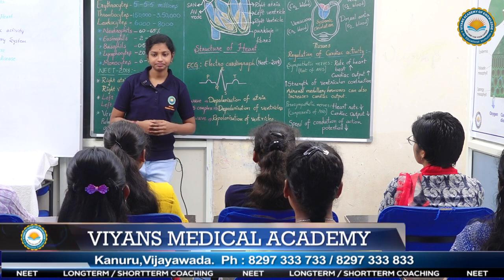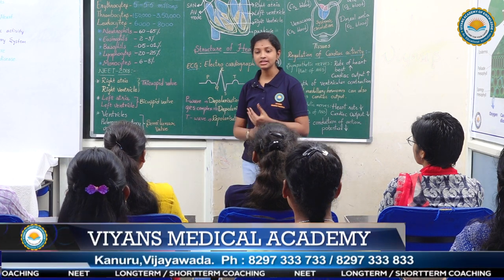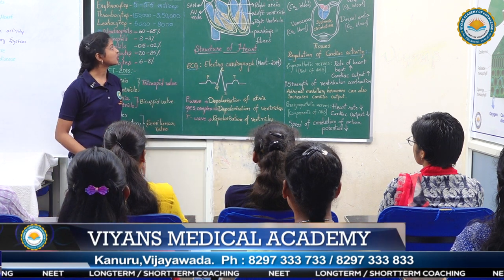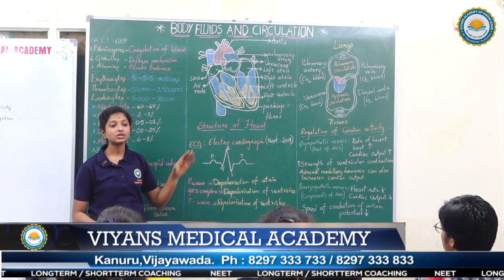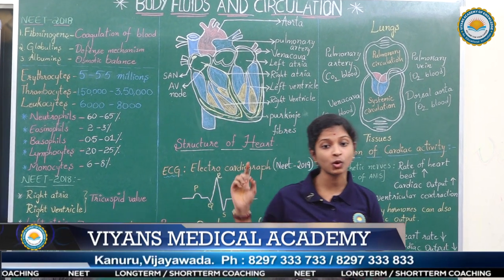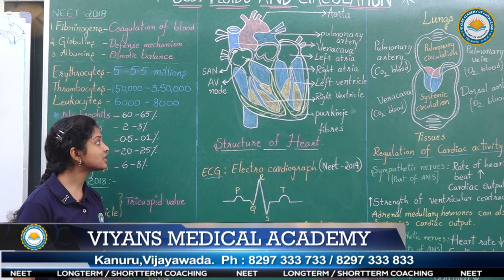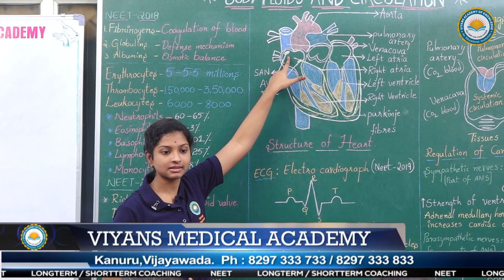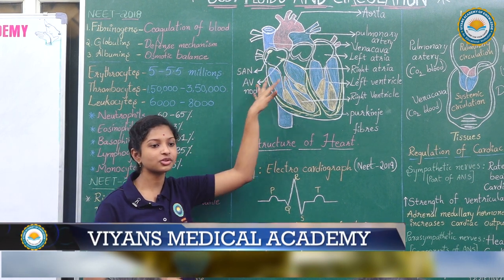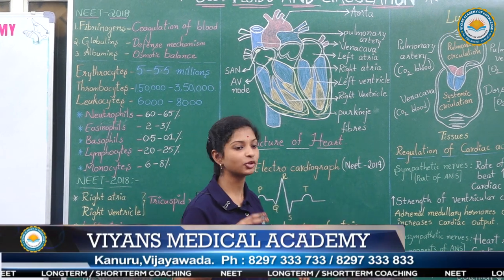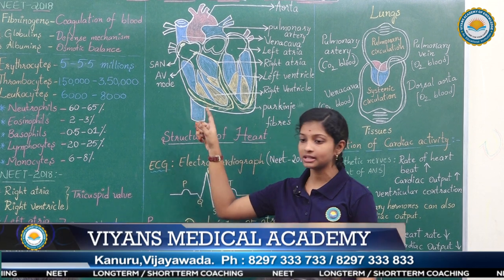Let us discuss the cardiac cycle. We divide it into four phases: Joint Diastole, Atrial Systole, Ventricular Systole, and Ventricular Diastole. In Joint Diastole, the four chambers of the heart are in a relaxed state; both cuspid valves are open and blood flows directly into the ventricles — 70% of the ventricles get filled at this stage. In Atrial Systole, the SA node generates impulses causing contraction of both atria, and the remaining 30% of blood fills the ventricles.